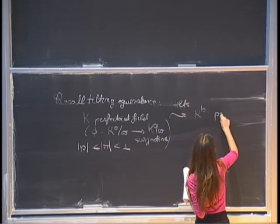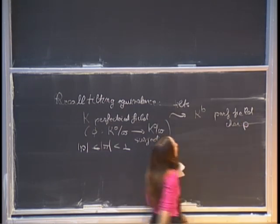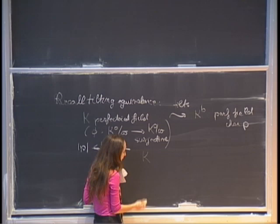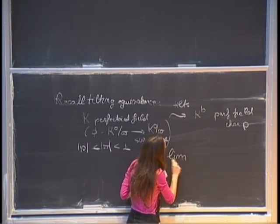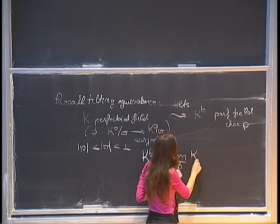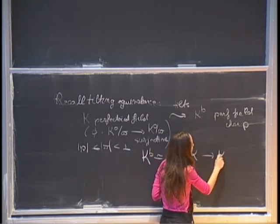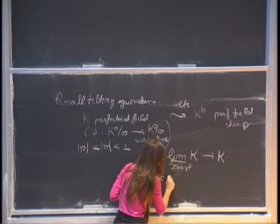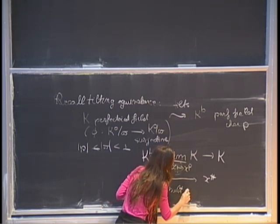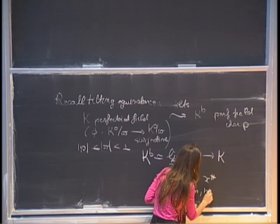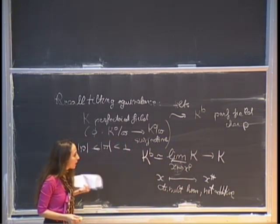This tilts to k-flat, the perfectoid field of characteristic p. We can identify the tilt with the inverse limit over Frobenius of k, where the map is x goes to x to the p. If we project to k, we get a map x goes to x-sharp. This is a continuous multiplicative homomorphism, but it's not additive and it's very far from surjective, and that's part of the problem.